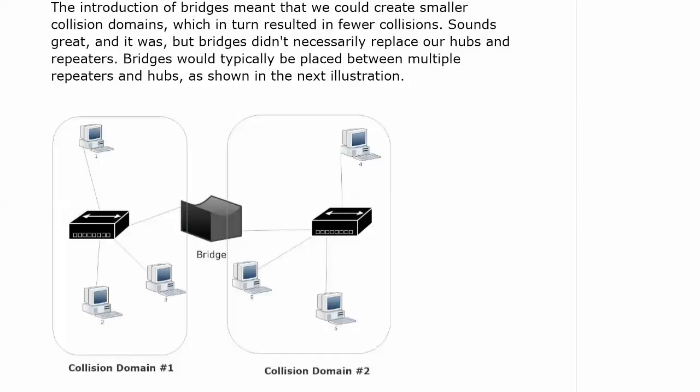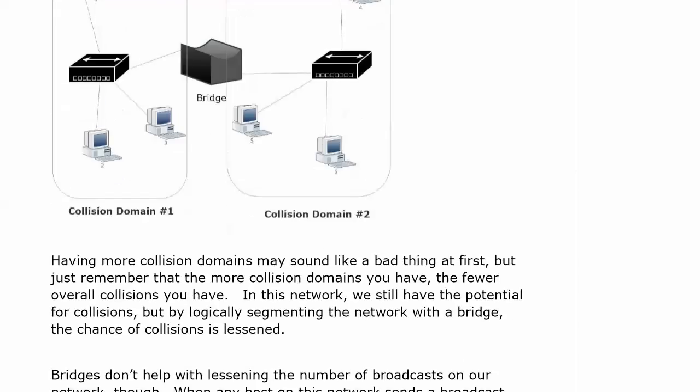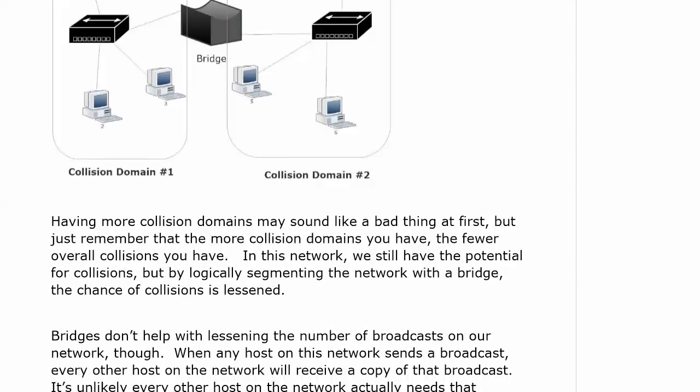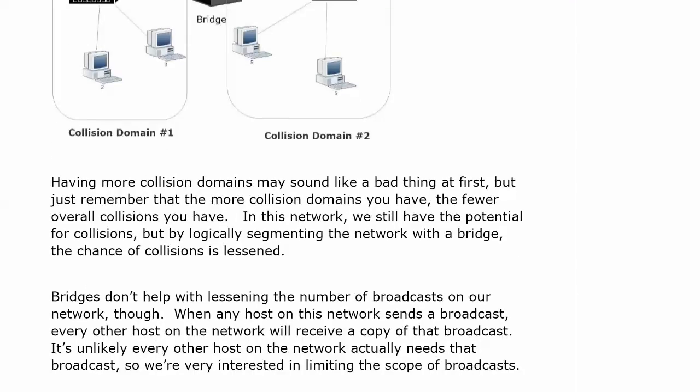Bridges didn't necessarily replace hubs and repeaters. What you ended up doing was using the bridge to segment your network. It would actually go between your hubs, like in this particular drawing, and here we have two collision domains. If the terms collision domain and broadcast domain are new to you, it may sound wrong that having more collision domains is a good thing. But actually, the more collision domains we have, the fewer overall collisions we end up having. So that was a big step forward — we're logically segmenting the network with a bridge, and the chance of collisions is lessened.